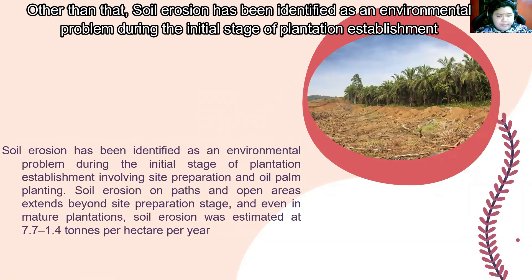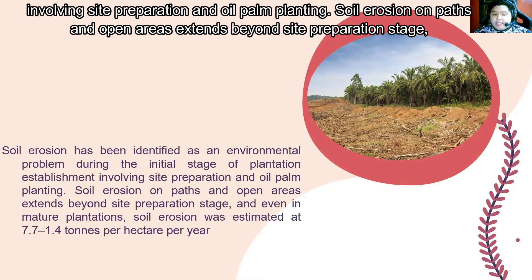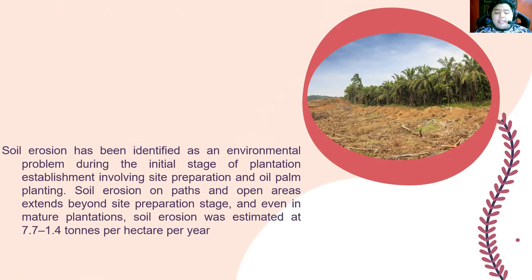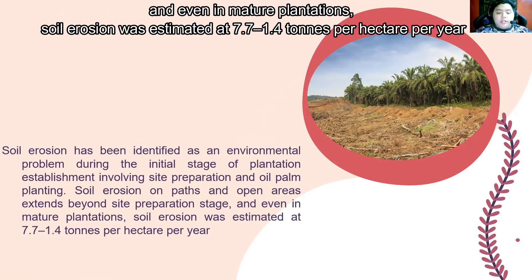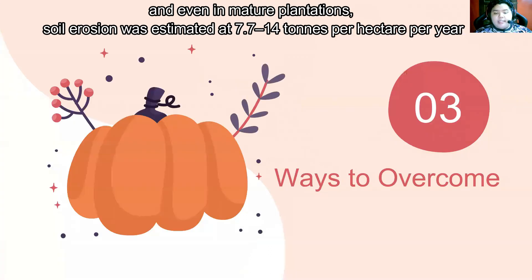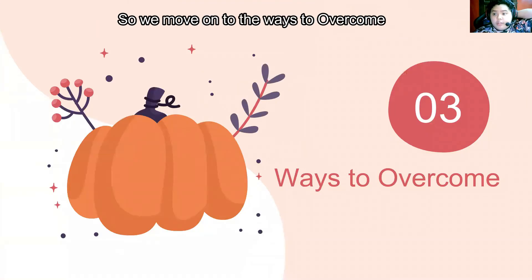Soil erosion has also been identified as an environmental problem during the initial stage of plantation establishment, involving site preparation and oil palm planting. Soil erosion on paths and open areas extends beyond the site preparation stage, and even in mature plantations, soil erosion was estimated at 7.7 to 14 tons per hectare per year.